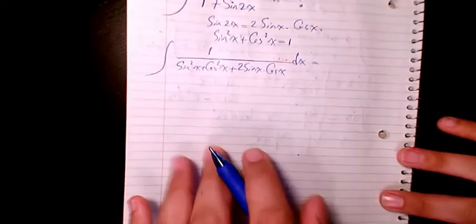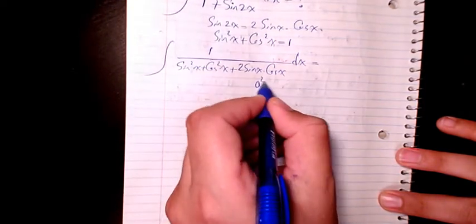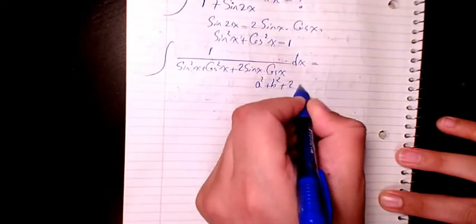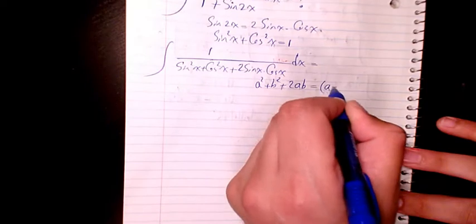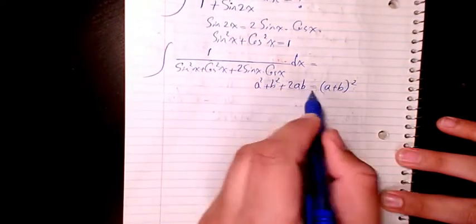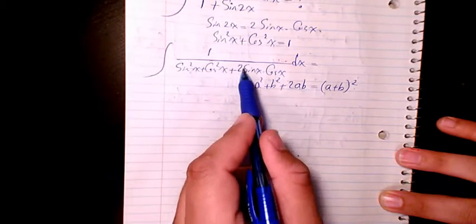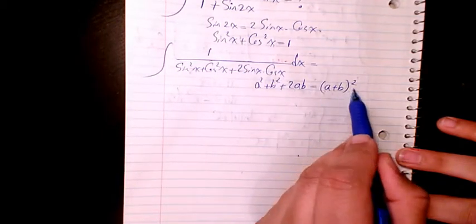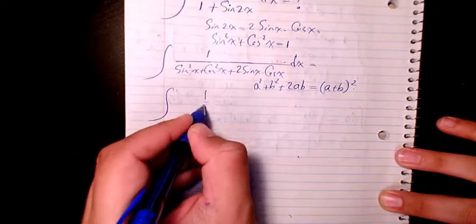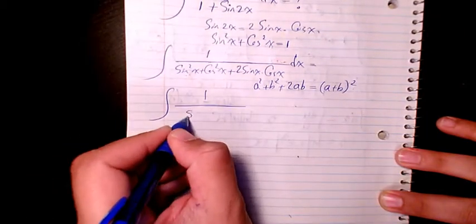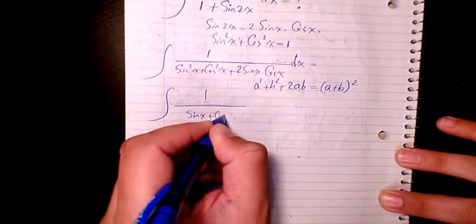Then you know a squared plus b squared plus 2ab equals a plus b squared. So a is sine in this case and b is cosine. So a squared plus b squared plus 2ab equals a plus b squared. So I will write as 1 over sine x plus cosine x squared dx.